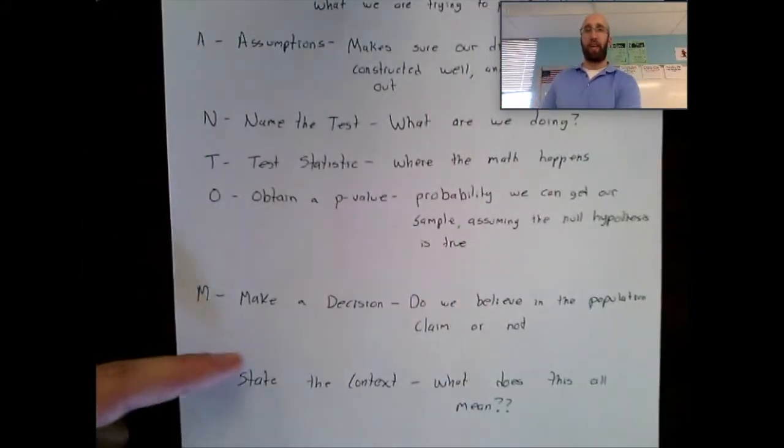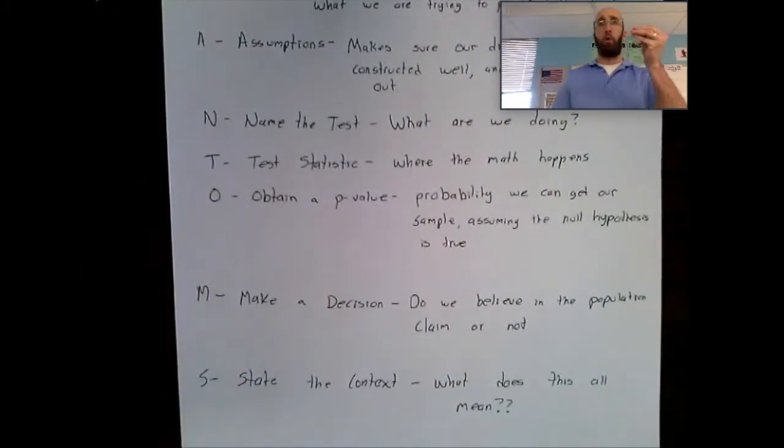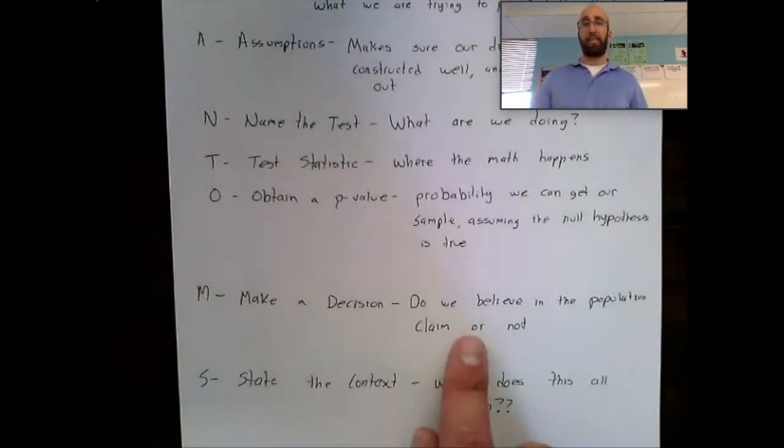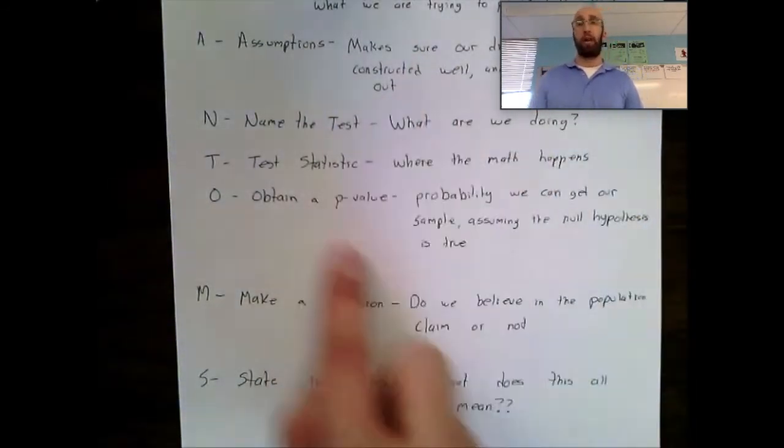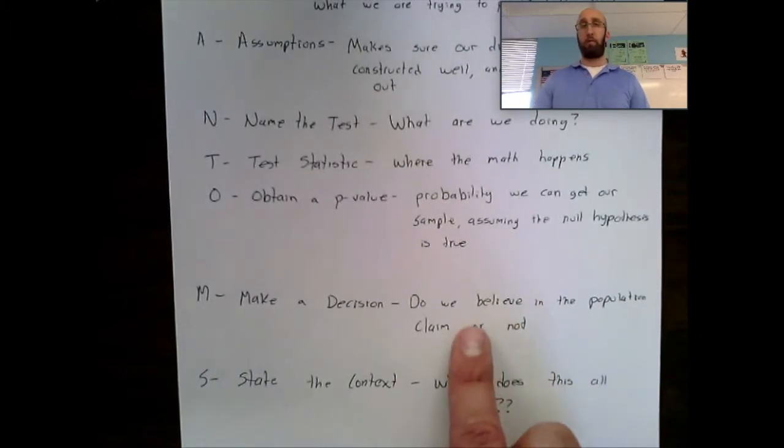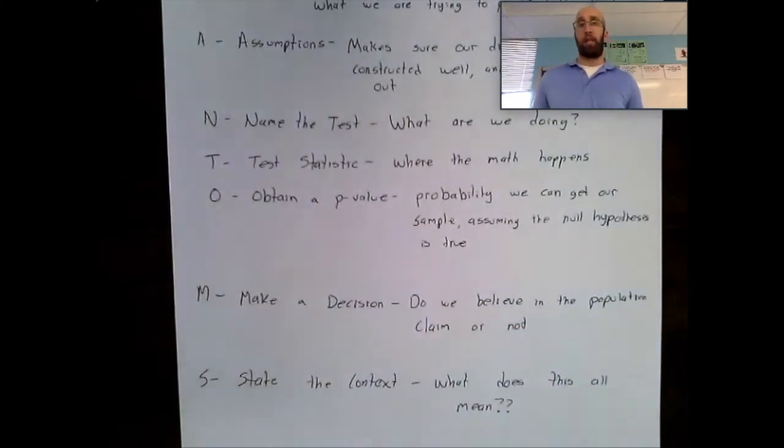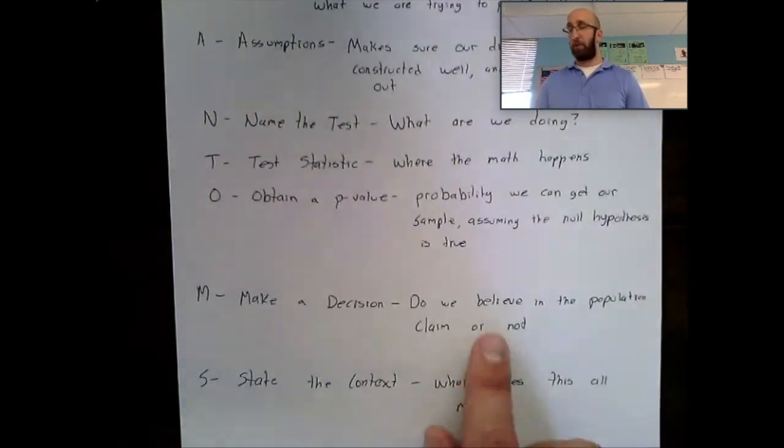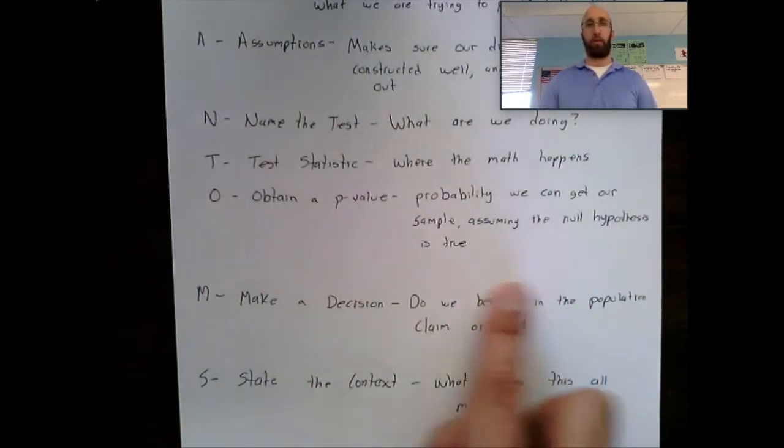And then we finally have our last two pieces of phantoms, which they're two different pieces, but they work together. The M is going to be make a decision. The S is state the context. So for the make a decision, this is where once we have all of our information and evidence laid out, we're going to decide, do we believe in our population claim or not? Do we believe the null hypothesis or have we shown enough to be like, no, I don't believe it. So this is where we're going to reject or fail to reject.